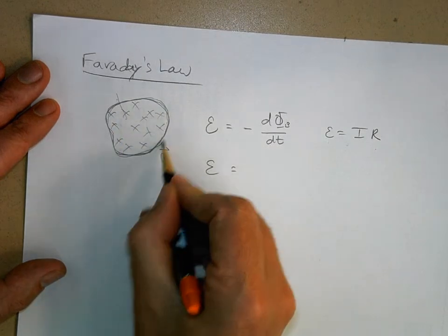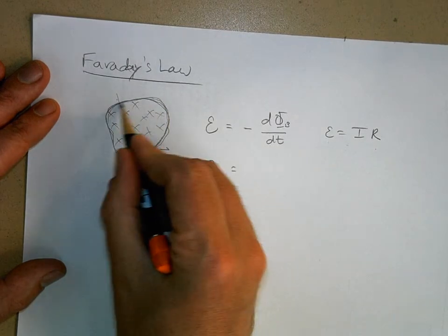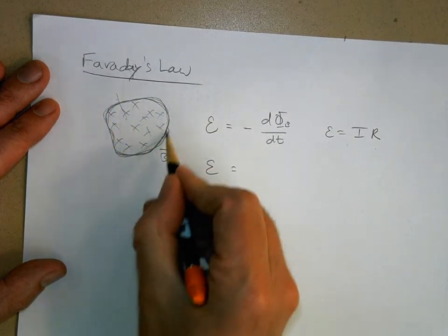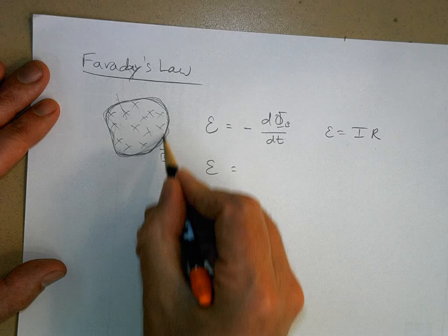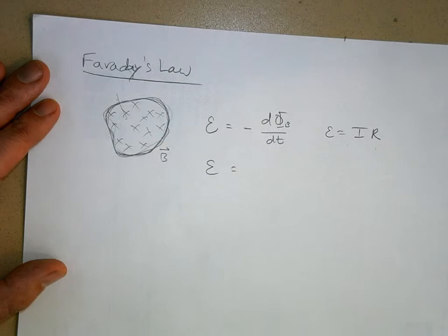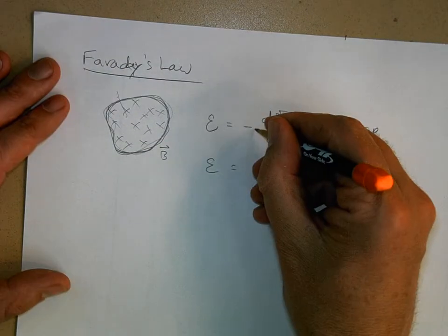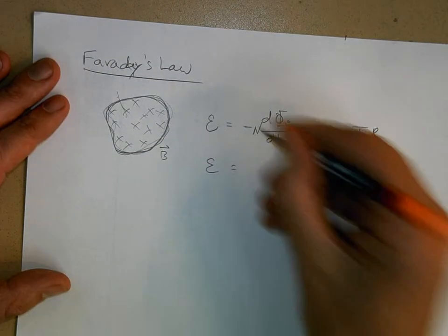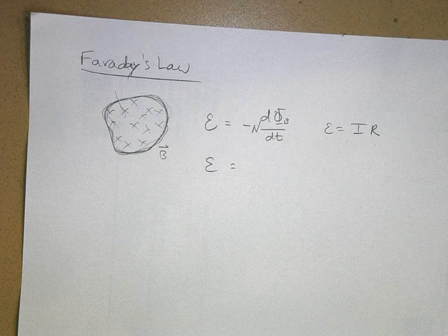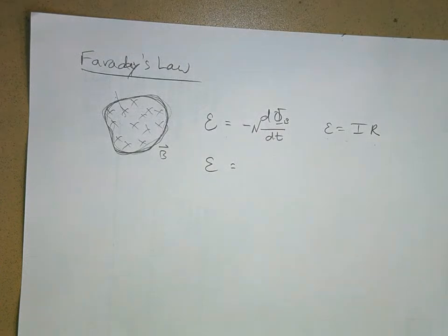If I take one loop, two loops, three loops — if I coil the wire up so it's in a bunch of loops, you just multiply the EMF by N. N is just a multiplier, the number of loops. It just multiplies the effect.